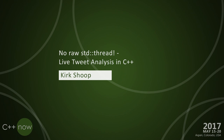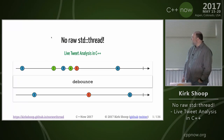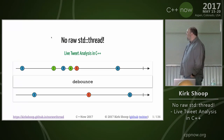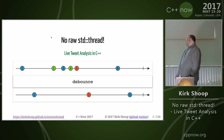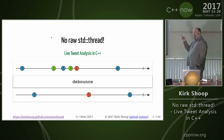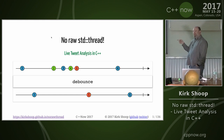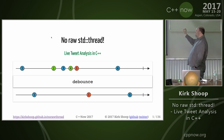Welcome to 'No Raw Standard Thread: Live Tweet Analysis in C++'. This is an example of a marble diagram, which helps us describe the inputs and outputs from algorithms for values distributed in time. You can see that there's an input timeline where values are distributed and an output timeline where values are distributed.